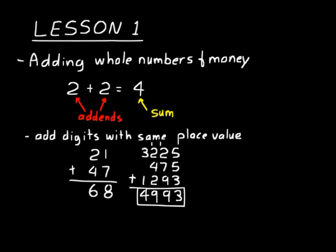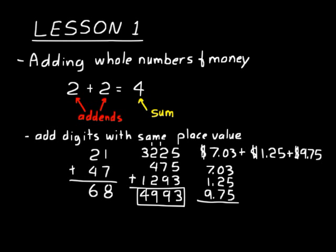Let's try an addition problem with money: $7.03 plus $1.25 plus $9.75. We do money the same way as the addition problem we just did - line up the digits with the same place value. One other thing with money is to line up the decimal points, which assures you've got it lined up correctly. I always do my addition vertically.